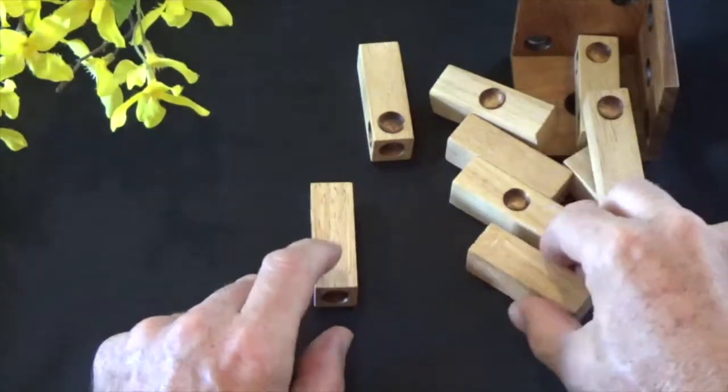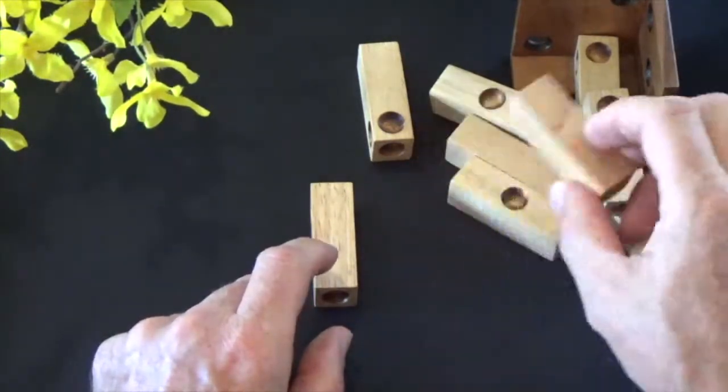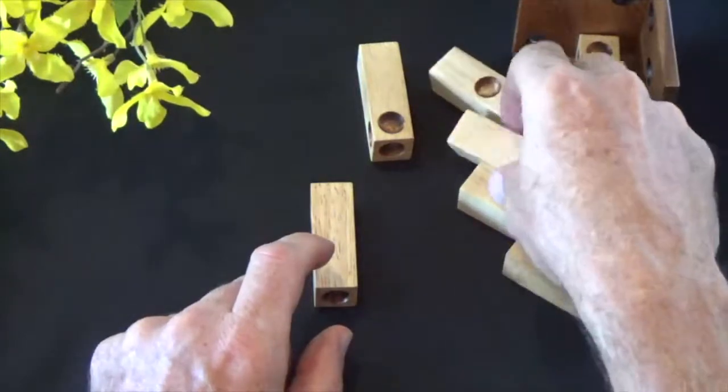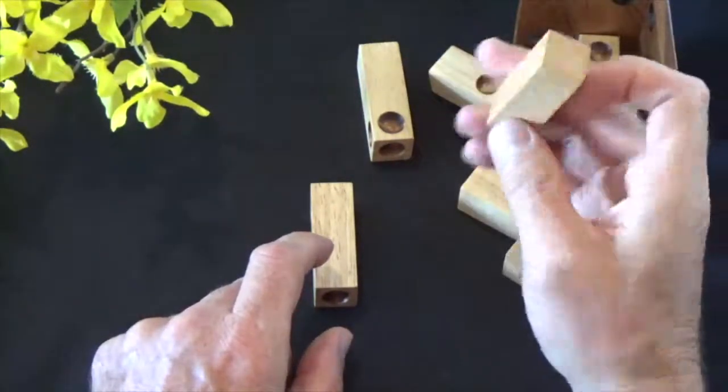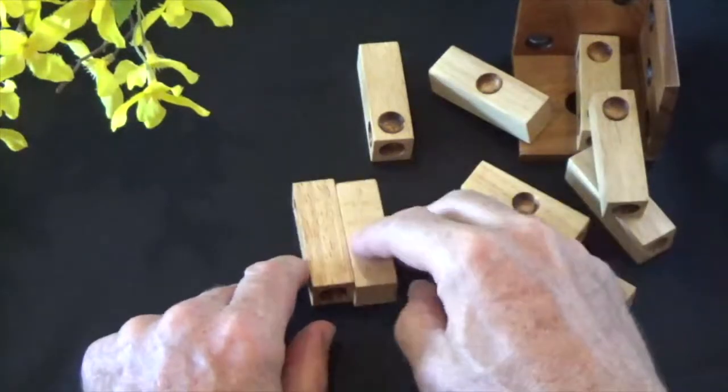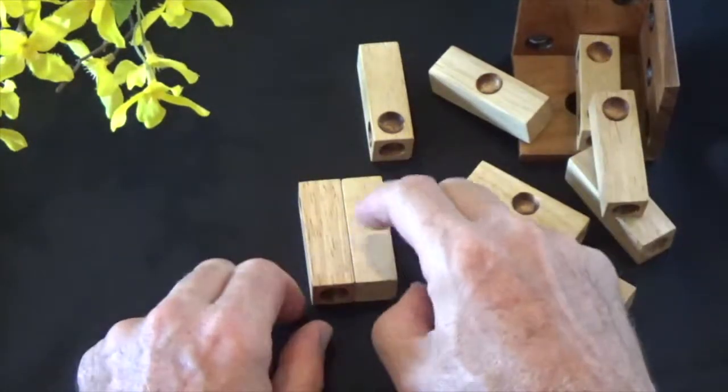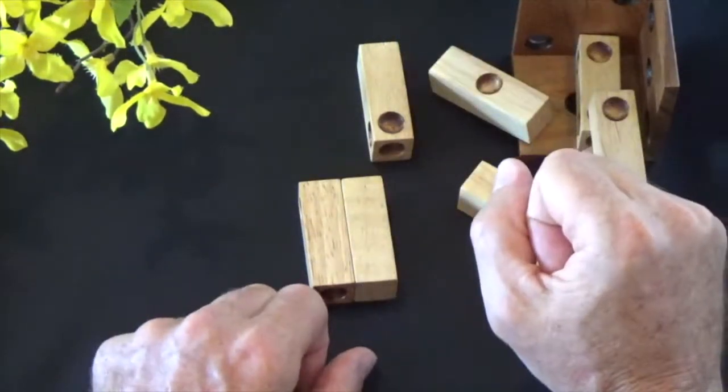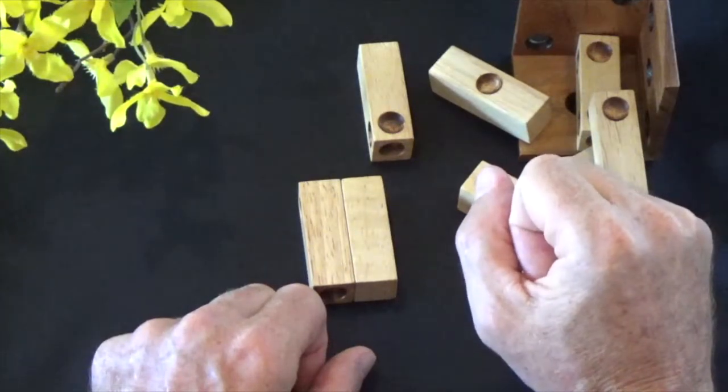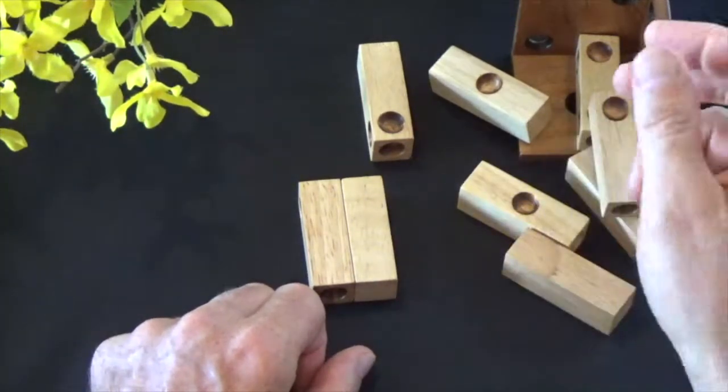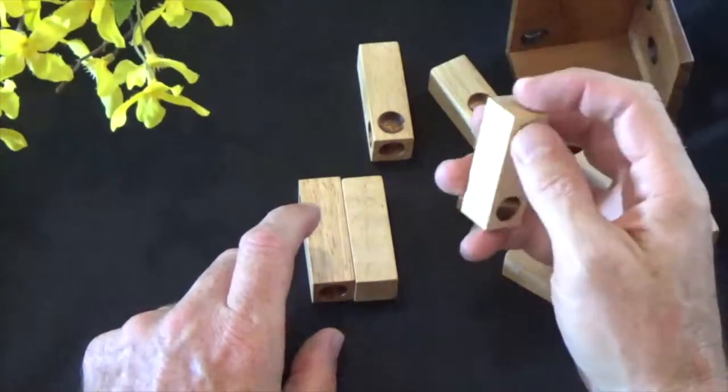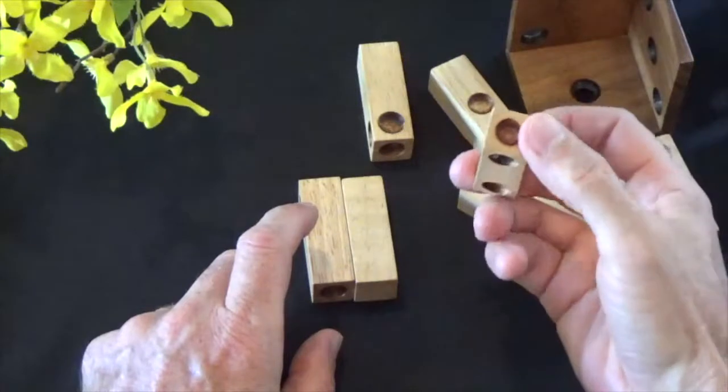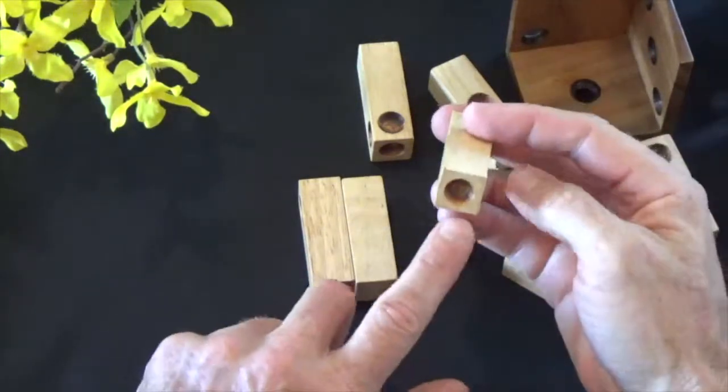The second piece that goes next to that is the piece that does not have any dots on it. So no dots on this piece. That forms the second piece in the base of this cube. And then the third piece is going to be also looking like this first one.